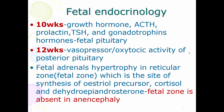Let's discuss fetal endocrinology. The anterior pituitary hormones appear mainly by 10 weeks — growth hormone, adrenocorticotropic hormone, prolactin, TSH, thyroid-stimulating hormone, and gonadotropins FSH and LH — they are released into fetal circulation.